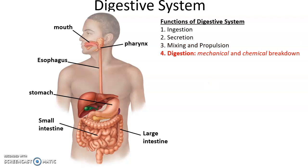Digestion is a breakdown of food. This includes mechanical digestion, which is taking the physical food and breaking it into smaller and smaller pieces — such as when we chew. And then chemical digestion, which is when we take big molecules in the food, like carbohydrates, and break them down into smaller chemicals, like the simple sugars.